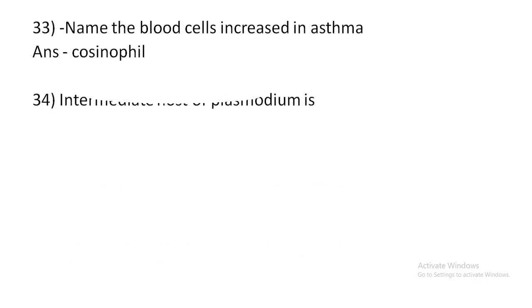The blood cell increased in asthma is eosinophil. The intermediate host of plasmodium is man.